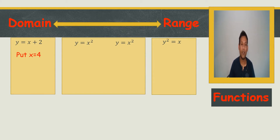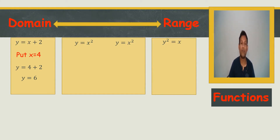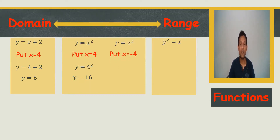The first example: when y equals x plus 2 and x equals 4, y comes out as 6 — a very simple equation. The second equation is y equals x squared. When x is 4, four squared is 16. But when x is minus 4, substituting minus 4 into the equation: (−4)² also gives 16.